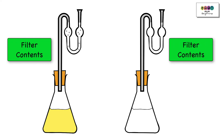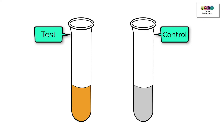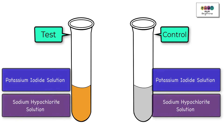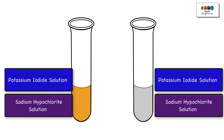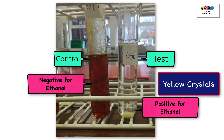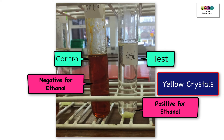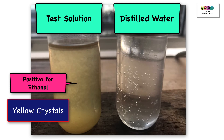After 24 hours, remove from the water bath or incubator and filter. Add some of the test filtrate into one test tube and some of the control filtrate into another. To test for alcohol, add some potassium iodide solution and sodium hypochlorite solution to both test tubes, then warm gently for four to five minutes. After cooling, the test tube on the right shows yellow crystals — a positive result for ethanol — whereas the control stays a browny-orange colour. Tested against distilled water, the test solution again gives a positive result: yellow crystals.